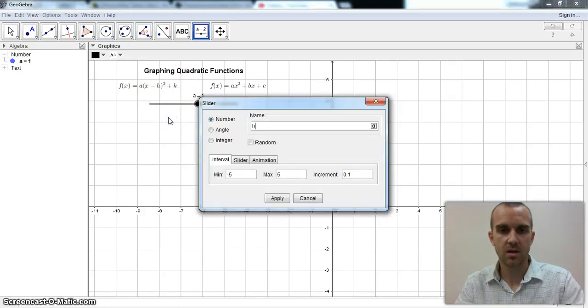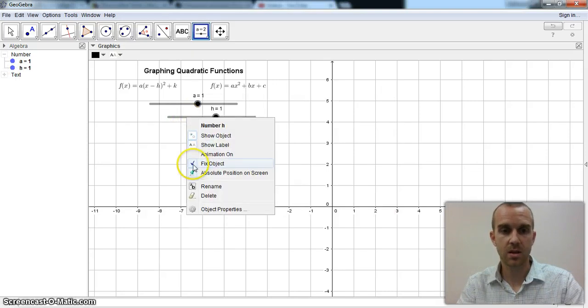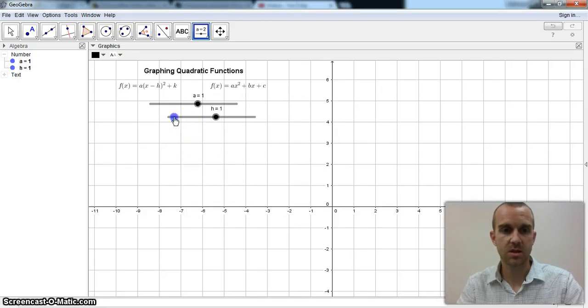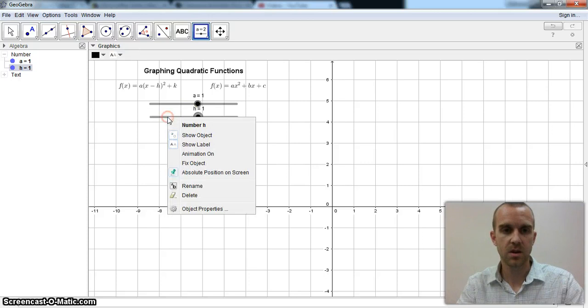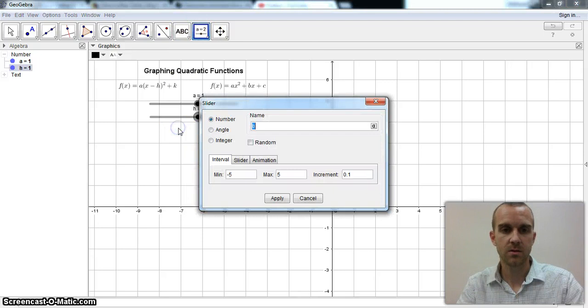I need the h and the k, so h from negative 10 to 10. And I don't like where it put it so I right click, I'm going to unfix the object to shift it over and right click again and fix it back. And then I need a third one. We'll call this k, negative 10 to 10.